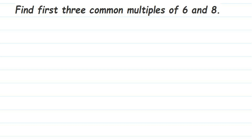Here's a question on multiples: find the first three common multiples of six and eight. Multiples are nothing but the table — for example, multiples of six will be six, twelve, eighteen, and so on. We're going to first find out the multiples of both six and eight, and then find out the common multiples from them.